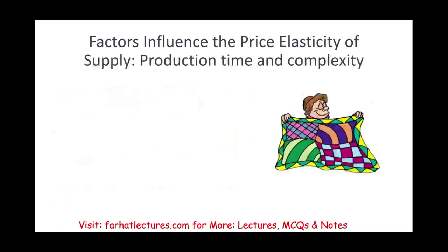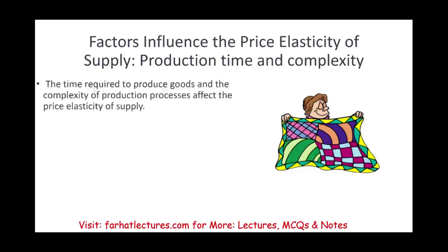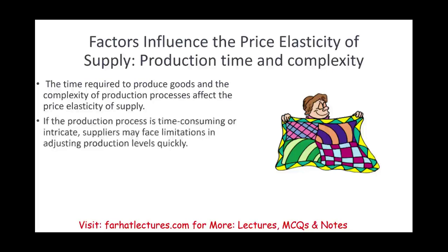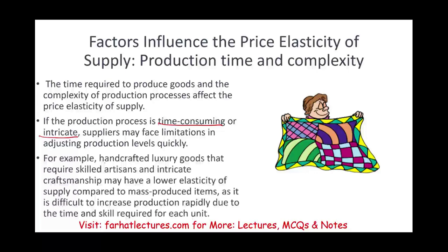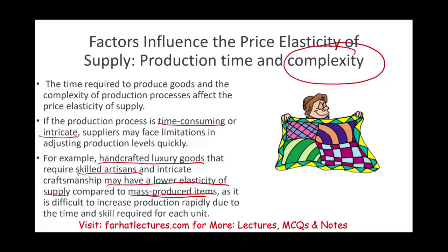Production time and complexity also influence elasticity. If the production process is time-consuming or intricate, suppliers may find it difficult to adjust production levels quickly. For example, handcrafted luxury goods requiring skilled artisans would have a lower elasticity of supply compared to mass-produced items, because expanding production is more complex and requires more time and special skills.